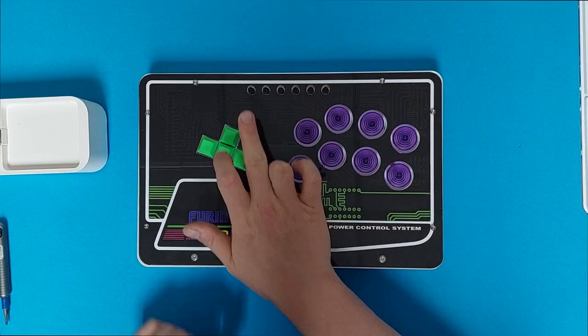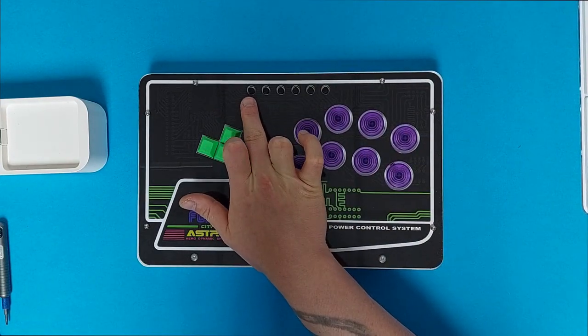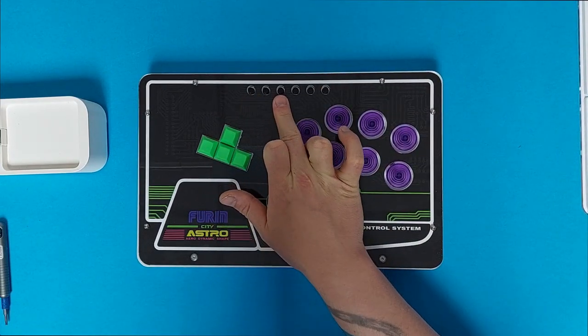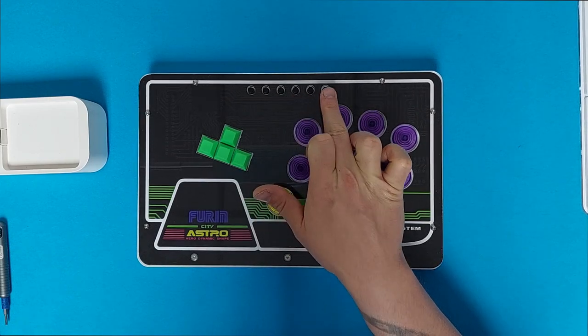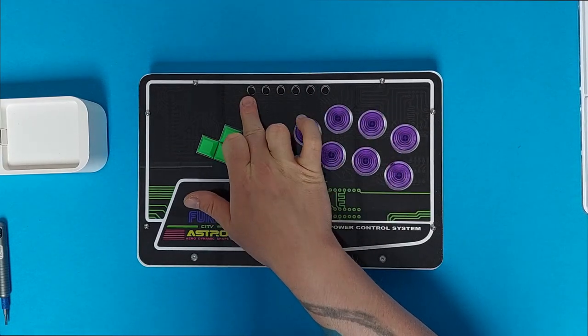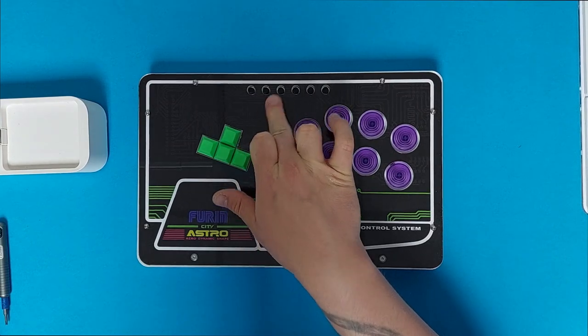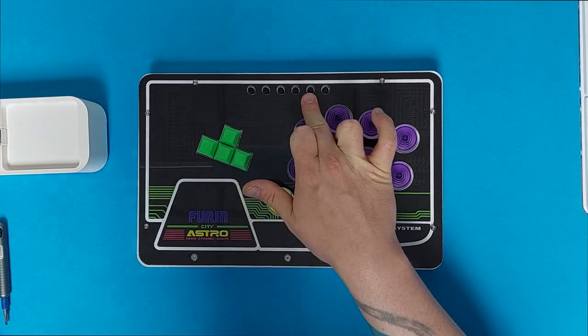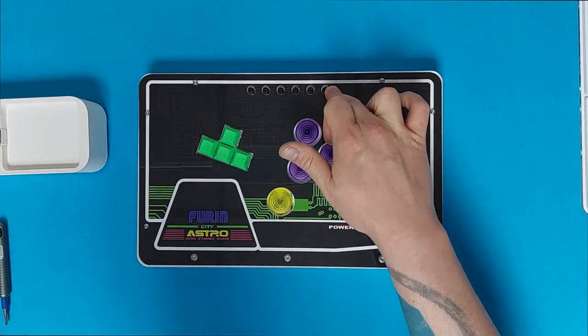Then across the top, we have the start buttons, which will go in order, start, select, home, touchpad, L3 and R3, which on a PlayStation will be options, share, PlayStation button, touchpad, L3 and R3.